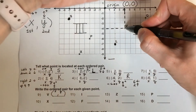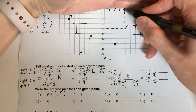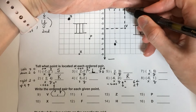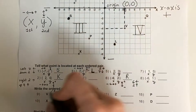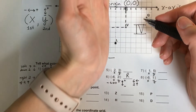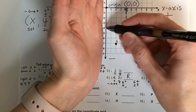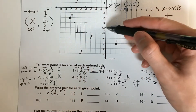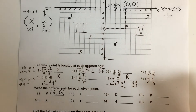Let's start with number nine. Here I have V. I'm going to draw some lines to connect to the x and to the y. This connects to four on the x-axis, so four is x. And this connects to negative four on the y-axis. So the ordered pair is (4, -4).